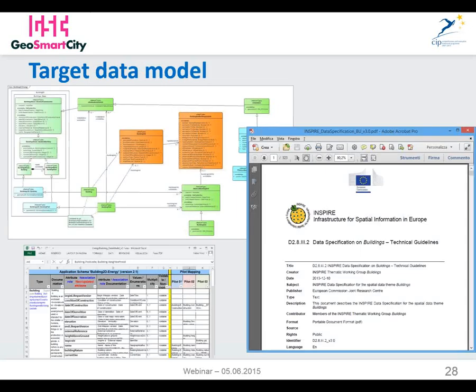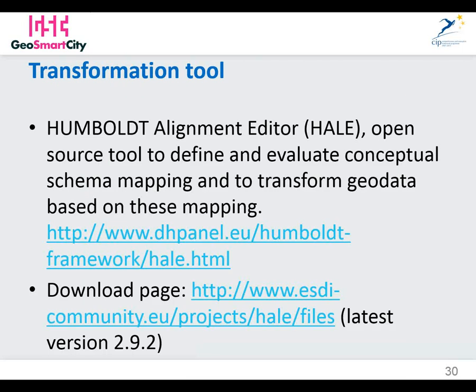This is our target data model — you can see the UML, the Excel file containing the model, and of course the data specification on buildings that we used to derive our XSD. Here you can see the mapping table and information about the transformation tool. Hale is an open source tool which evaluates conceptual schema mapping and transforms geodata based on the mapping. Download page and further info can be found in this slide.